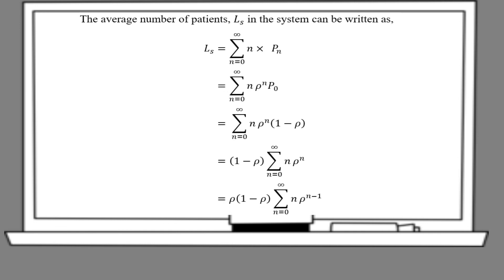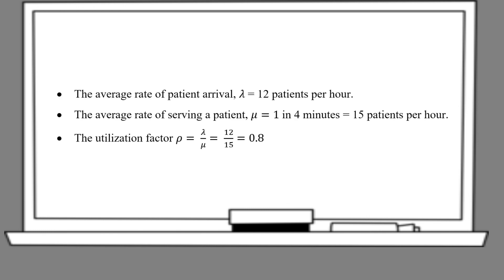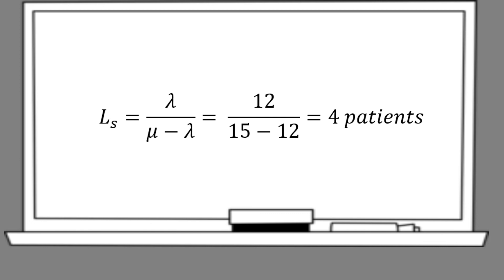Back to the question: we want to get the average number of patients in the system. We let this average number as L_s, which equals the summation of n times P_n, where n is from 0 to infinity. Substitute P_n with the general form obtained in the previous calculation. After substituting rho with lambda over mu, we get the equation for average number of patients. From the question, lambda equals 12 patients per hour, and the average serving rate is 1 patient every 4 minutes, which means mu equals 15 patients per hour. Therefore, the utilization factor rho equals lambda over mu equals 0.8, and the average number of patients in the clinic is 4 patients.